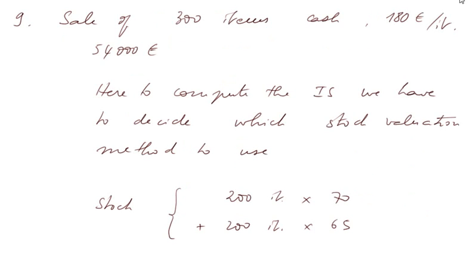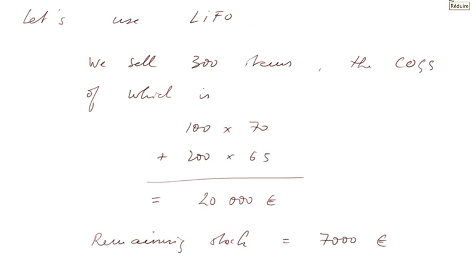Now comes an interesting transaction: a sale of 300 items for cash, each worth 180 euros — that's a sale of 54,000 euros. To compute the income statement, we have to decide which stock valuation method to use, since we have 400 items in stock — some worth 70, some worth 65 per item — and we sell 300. We decide to use the LIFO method: 200 most recent items at 65 are all gone, plus 100 items at 70. That gives a COGS of 20,000 euros and a remaining closing stock of 7,000 euros.